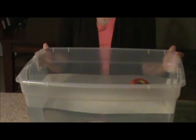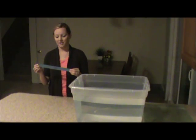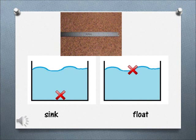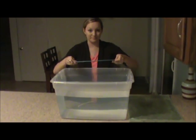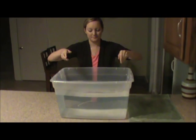Go ahead and write this observation on your observation chart. Our next object is a metal ruler. When I drop this metal ruler in the water, do you think it's going to sink or float? Write your hypothesis on your chart. Let's drop the metal ruler into the water. Does your hypothesis match your observation? Go ahead and write your observation on your chart.